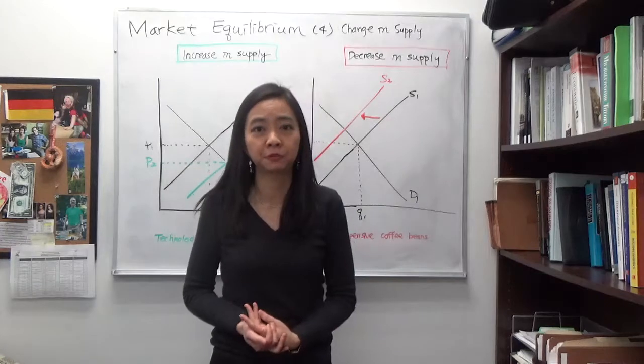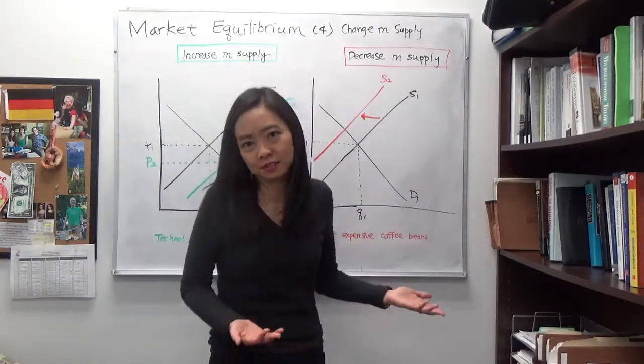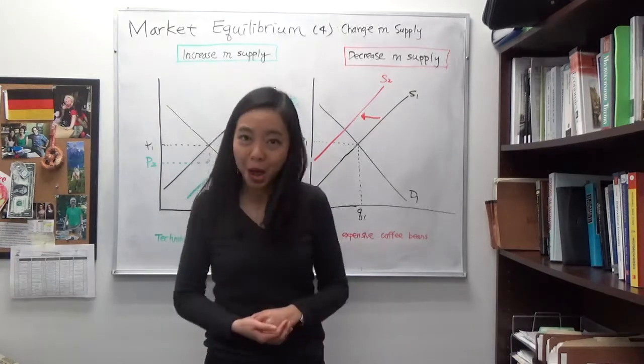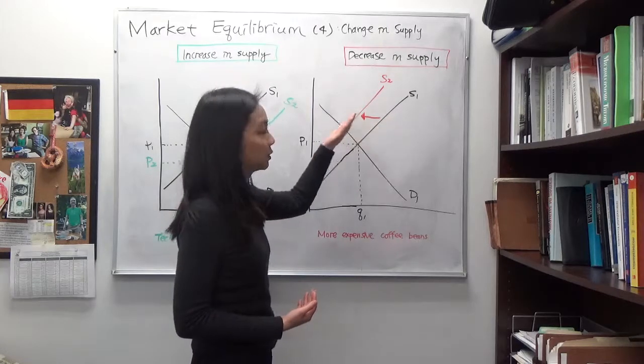So suppose we have more expensive coffee beans. For example, maybe because of climate change, there are less coffee beans available. So the price of coffee beans will go up, and then that will shift our supply curve to the left.